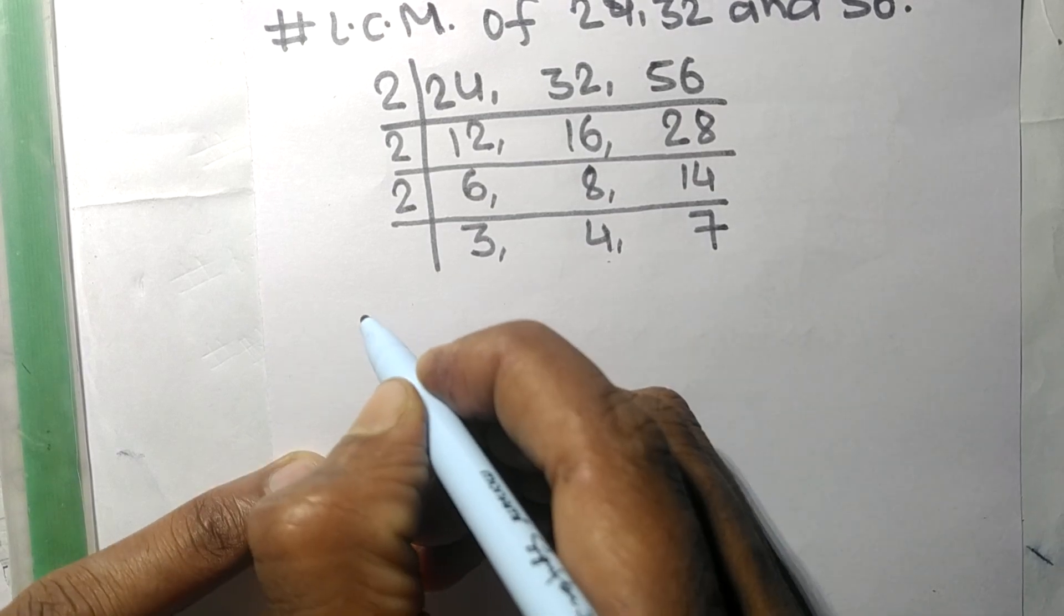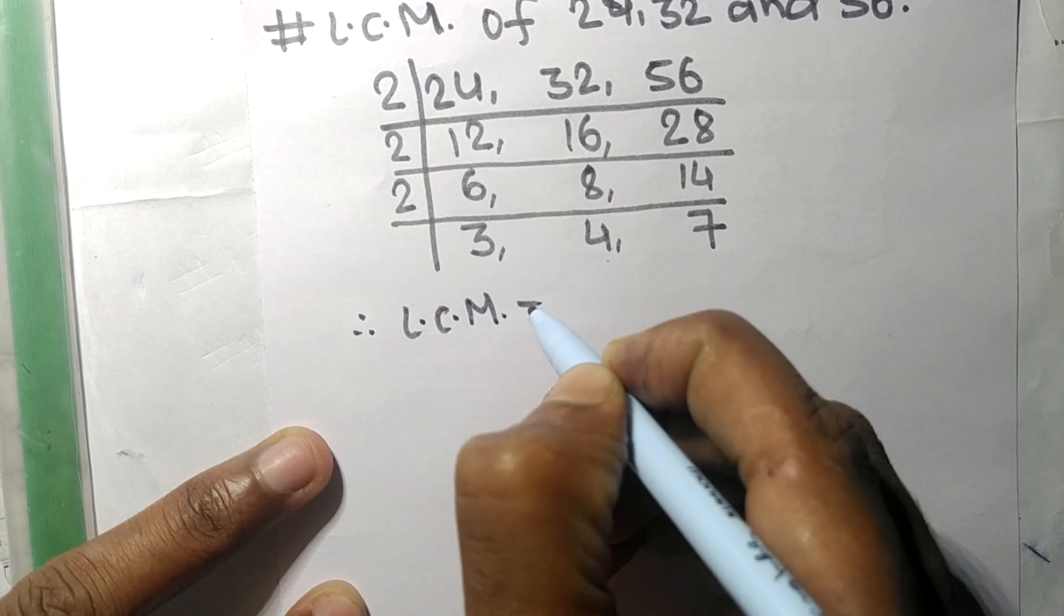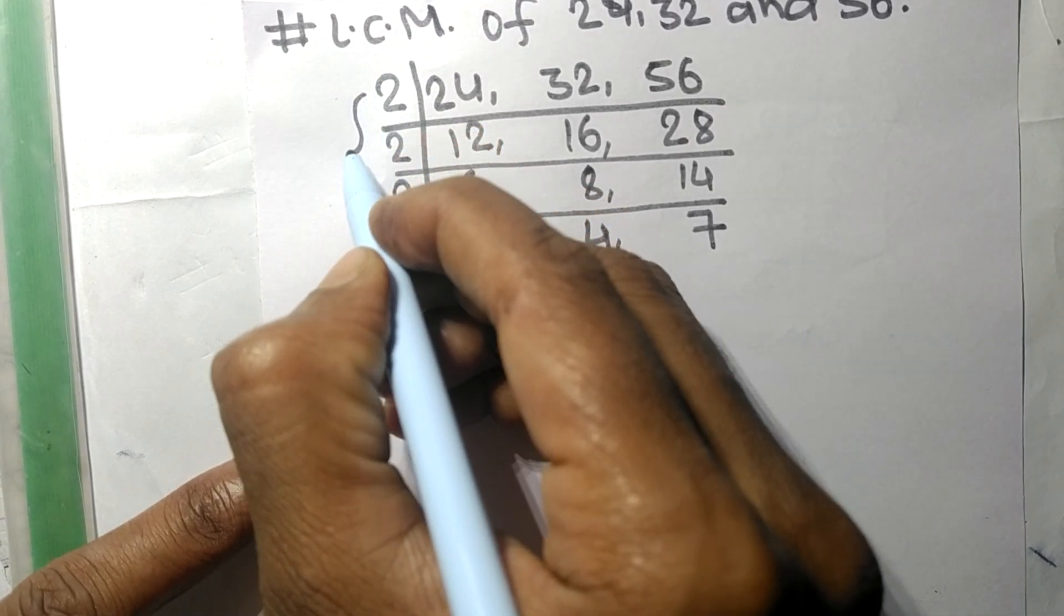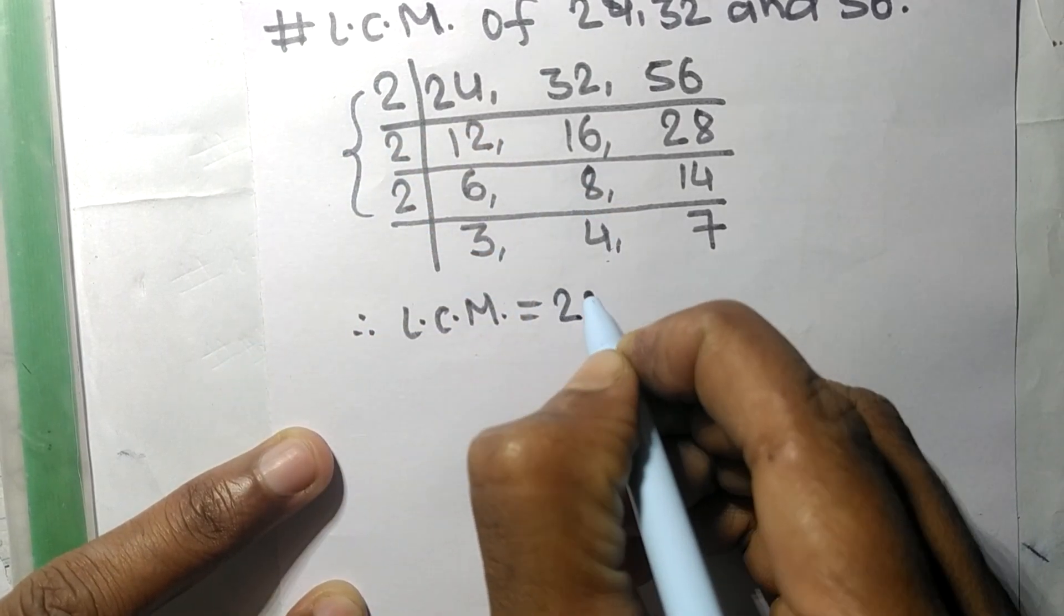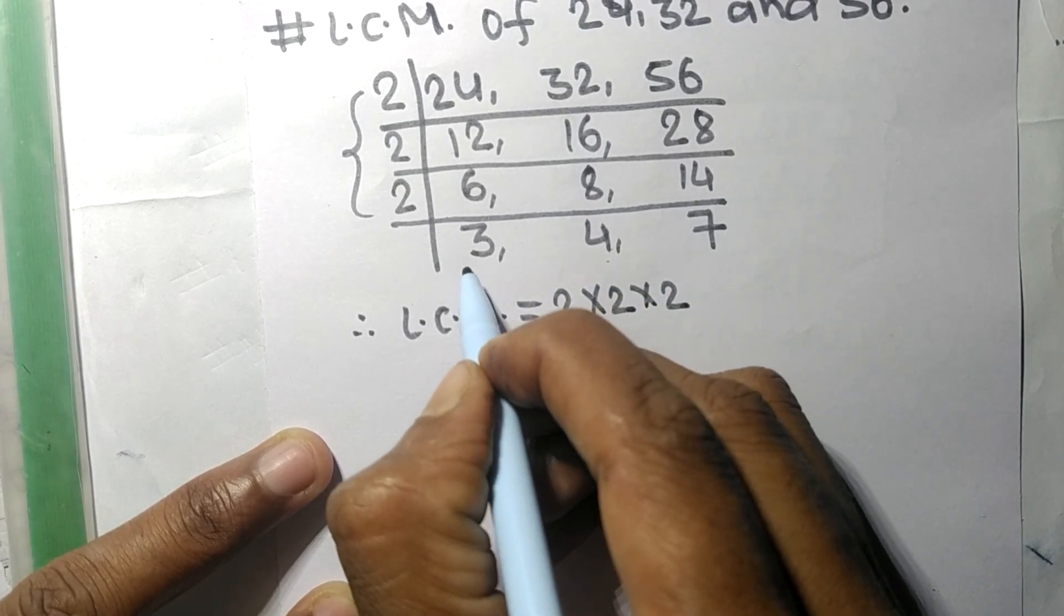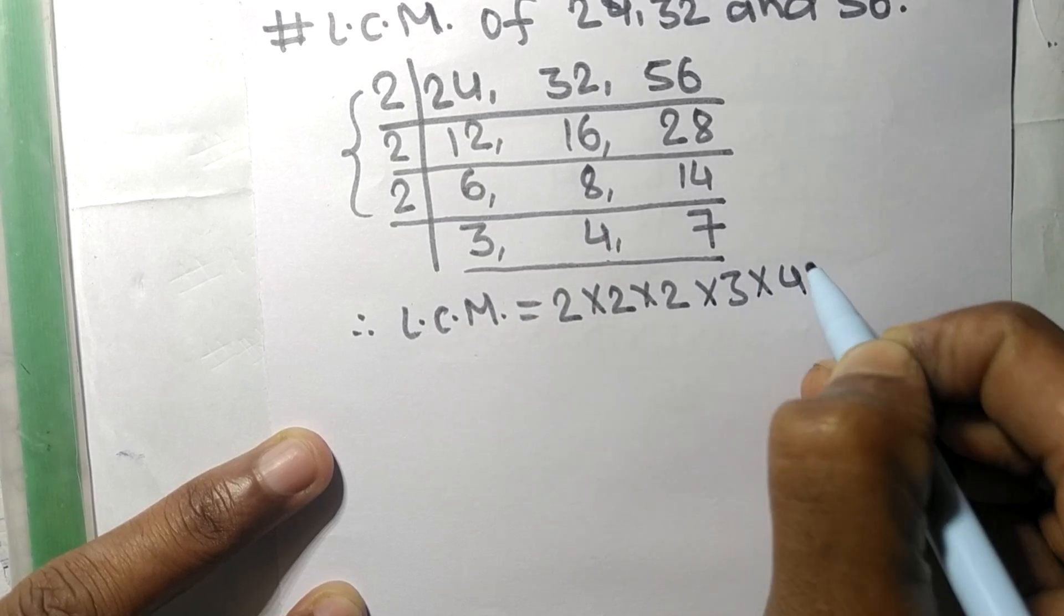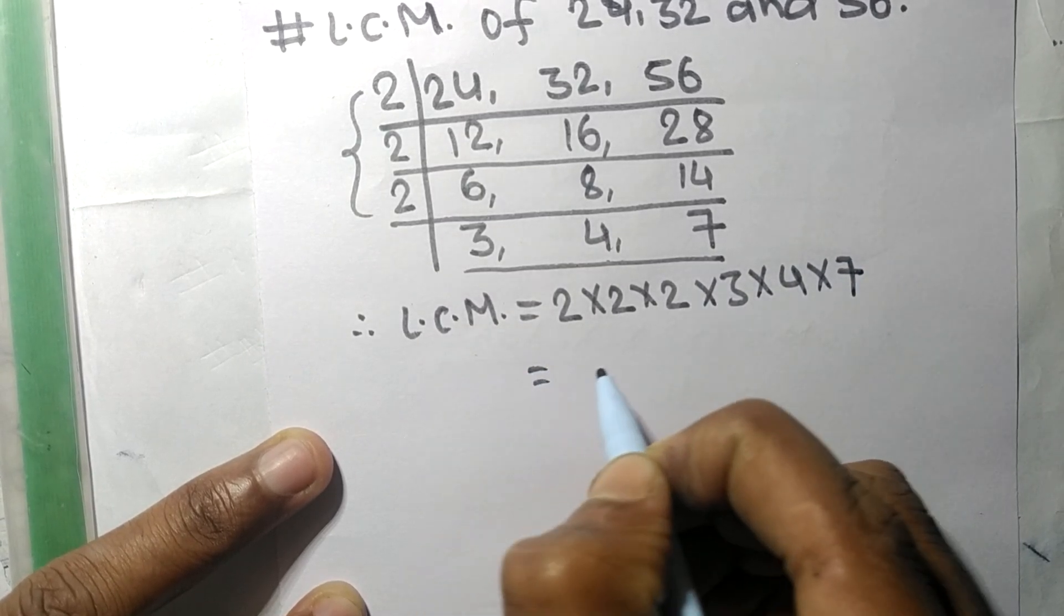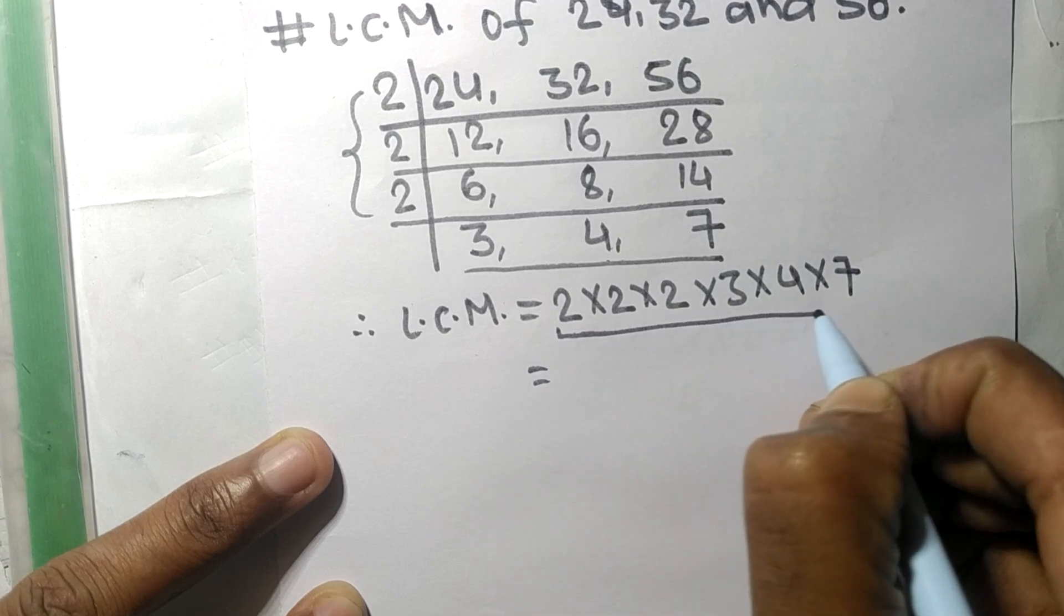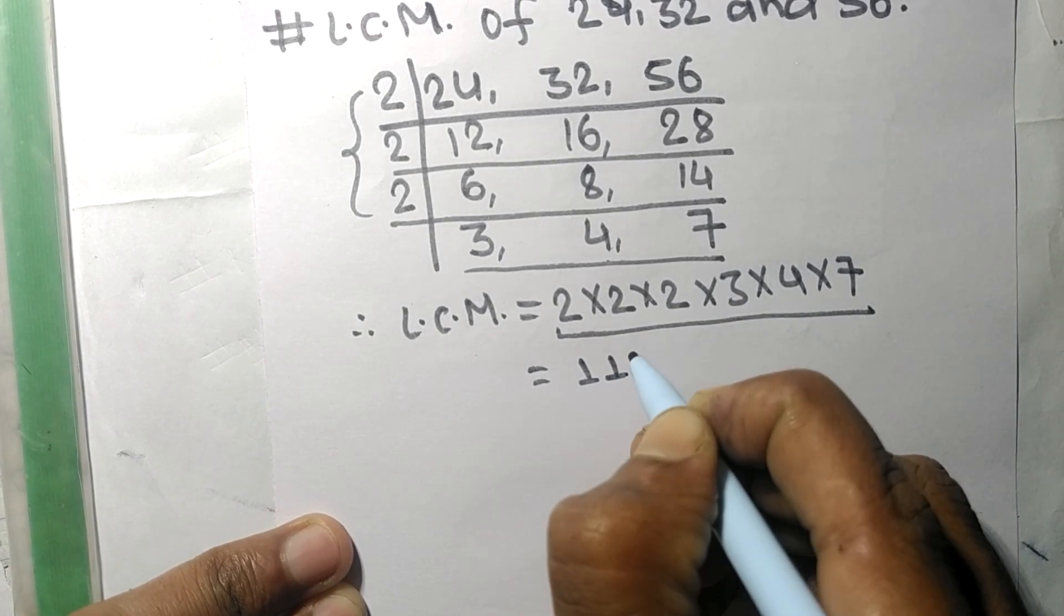Therefore its LCM is equal to, from this side it is 2 times 2 times 2, and from this side it is 3 times 4 times 7. So by multiplying all these numbers we got 1152.